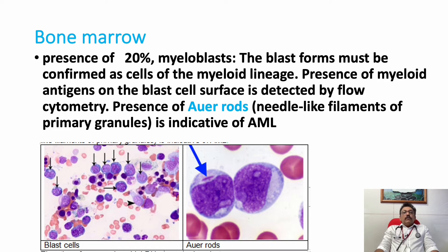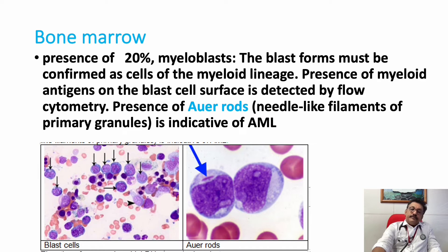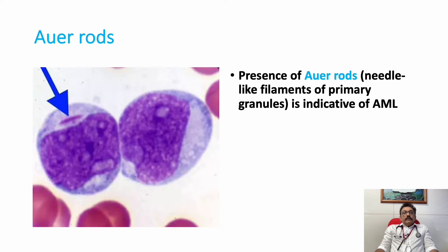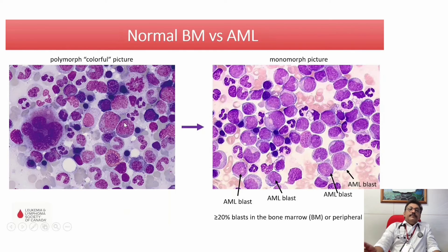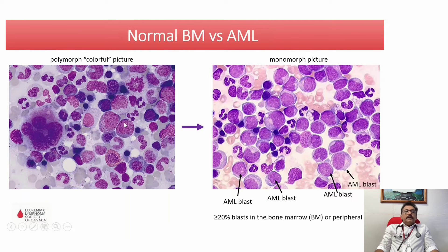Auer rods are needle-like filaments of primary granules and are indicative of acute myeloid leukemia — very classical for AML. You can see here the spindle-like shadow inside the cells — that is the Auer rod. In the second slide you can see plenty of blast cells with Auer rods; the first slide is a normal bone marrow slide for comparison.